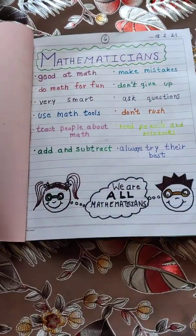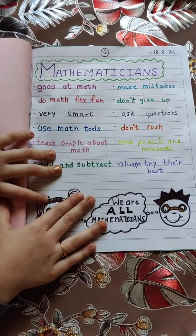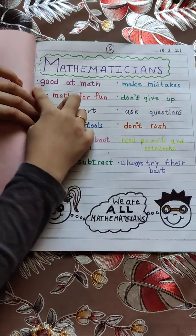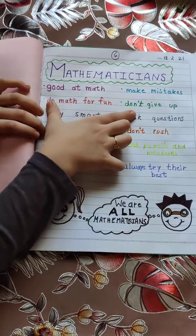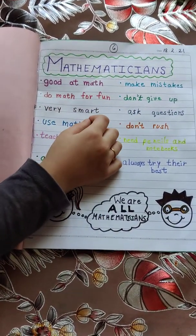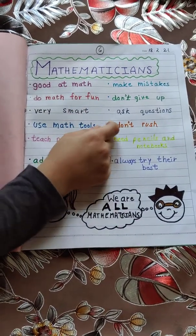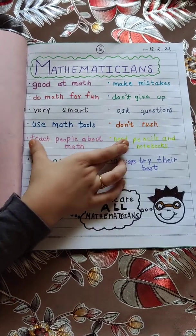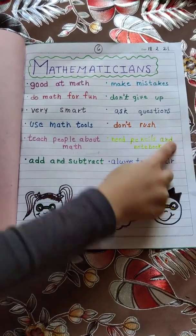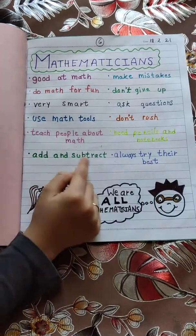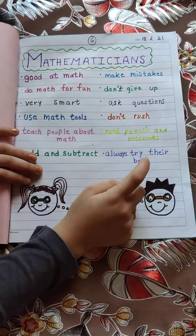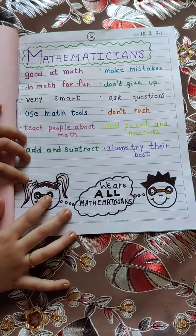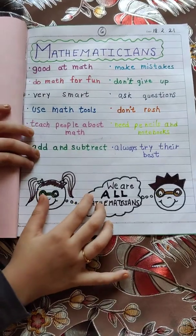My last topic is qualities of mathematicians. The qualities of mathematicians are: good at maths, make mistakes, do maths for fun, don't give up, very smart, ask questions, use maths tools, don't rush, teach people about maths, have pencils and notebooks, add and subtract, and always try their best. We all have these mathematician qualities, so we are all mathematicians.